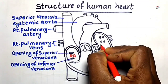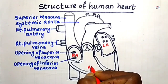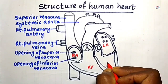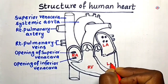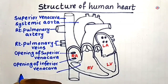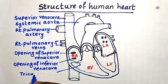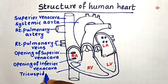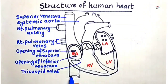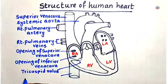Left auricle. Right ventricle. Left ventricle. This is called Tricuspid Valve. This is called Inferior Venakabha.